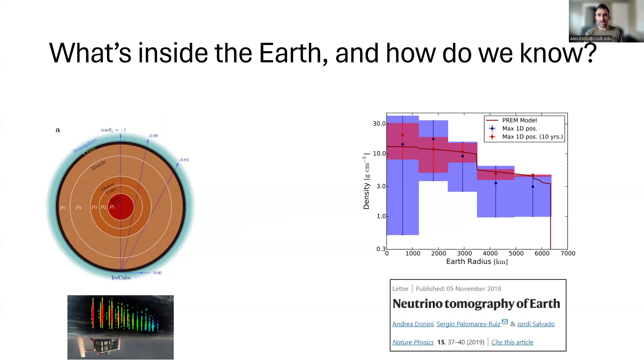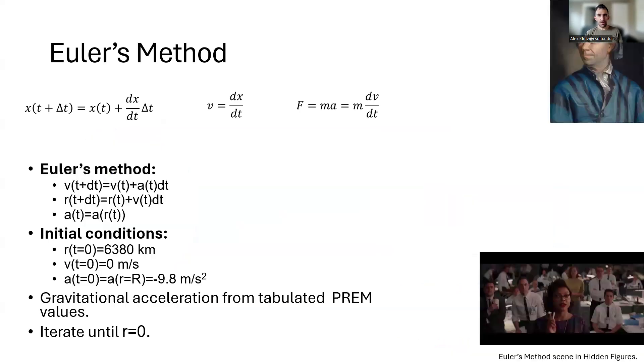So we can't just write down an equation that tells us how long it takes to fall through this PREM gravity profile. So we have to use numerical methods. One of the simplest is Euler's method, which essentially expands out the derivative. So I know that my position in the future is my position now plus my velocity times the time difference towards the future. My velocity in the future is my velocity now plus my acceleration times the time difference towards the future.